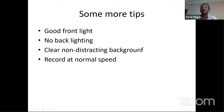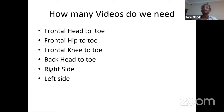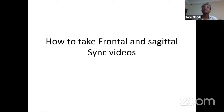Some additional tips: always ensure good front lighting — the patient should face the light; light coming from behind the patient will blur the video. Use a clear, non-distracting background — avoid people walking around or distracting elements. Record at normal speed; many therapists and surgeons record in slow motion using their phone's camera setting, but always record at normal speed — you can watch in slow motion later. In total, record six videos: frontal head-to-toe, frontal hip-to-toe, frontal knee-to-toe, back head-to-toe, right side, and left side.